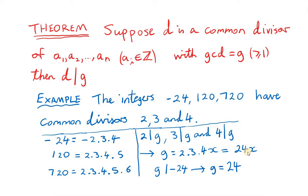g cannot be 0, and x is a positive integer, so x can only have values 1, or 2, or 3, etc. So x must equal 1 in this case, if we want g to divide minus 24.